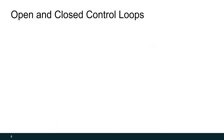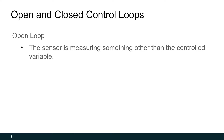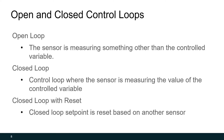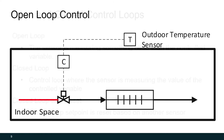There are two main types of control loops: open loop and closed loop. In an open loop, the sensor is measuring something other than the controlled variable. In a closed loop, the sensor is measuring the controlled variable directly. We can actually combine these to make a loop called closed loop with reset, where the closed loop set point is reset based on another sensor. Let's go through some examples to make these more clear.